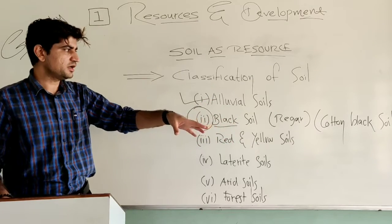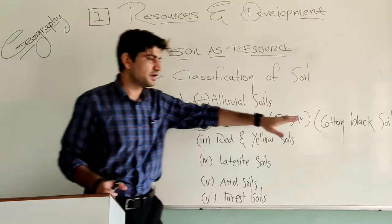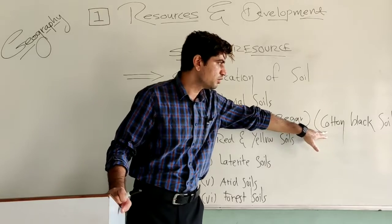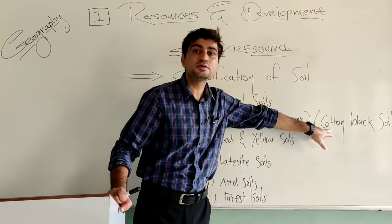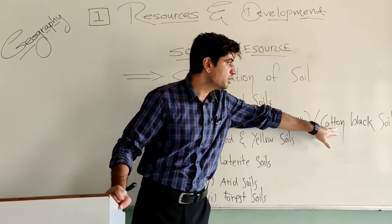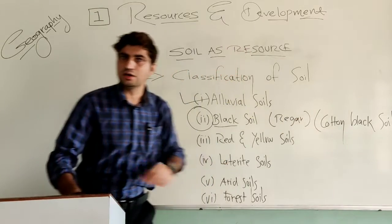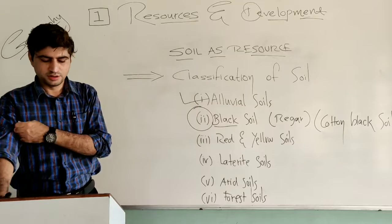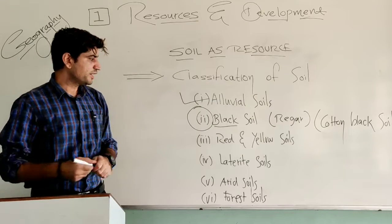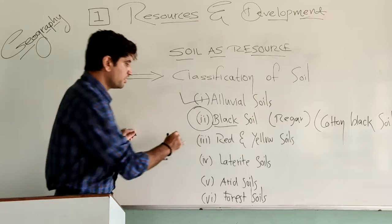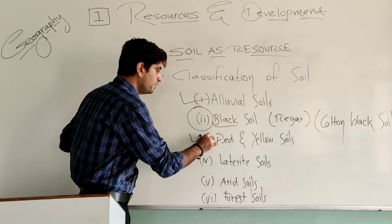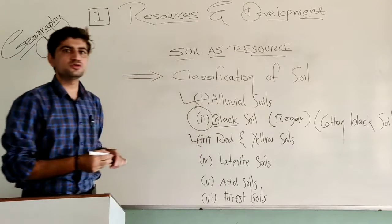That is why Baruch is well known for growing cotton — because here there is black soil. Next, red and yellow soil.